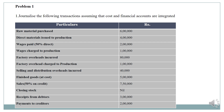Second transaction: direct materials issued to production, worth rupees 4 lakh. Materials are recorded in stores ledger control account. Third transaction: wages paid — 2 lakh rupees, 50% direct and remaining 50% indirect. Wages related information is recorded in wages control account.